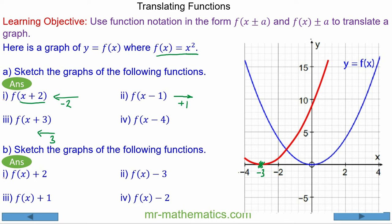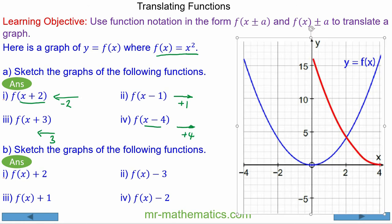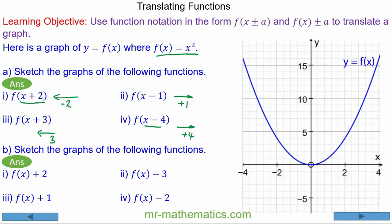For question 4, we're going to perform a horizontal translation to the right by 4 units, so you can see the turning point is at x equals 4.